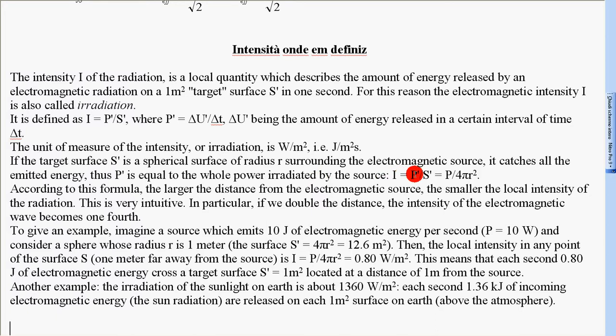I = P'/S' = P/(4πR²). According to this formula, the larger the distance from the electromagnetic source, the smaller the local intensity of the radiation.